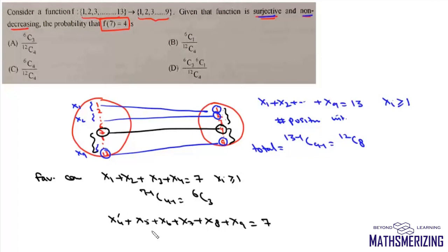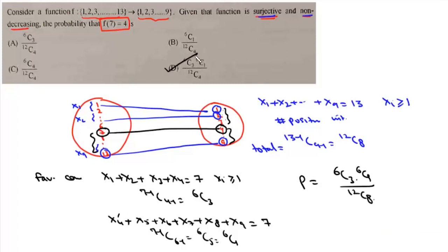Again the number of positive integral solutions will be 7 minus 1 choose 6 minus 1, which is 6 choose 5 or 6 choose 1. So this required probability will be 6 choose 3 times 6 choose 1 over 12 choose 8, and that's option D.